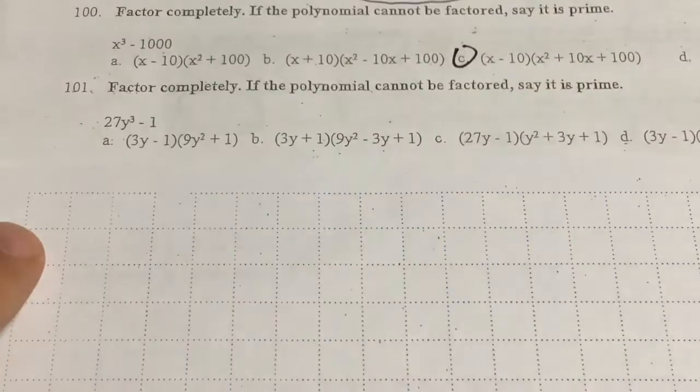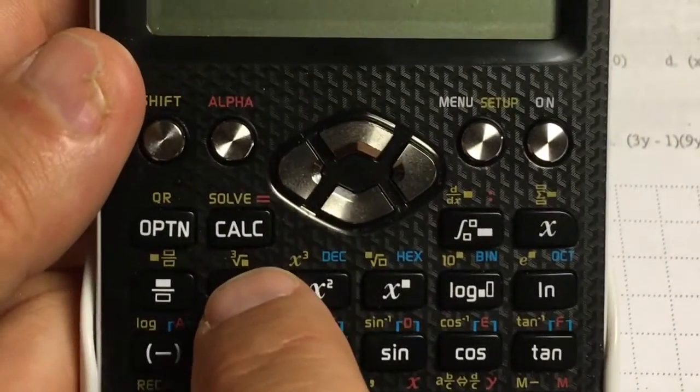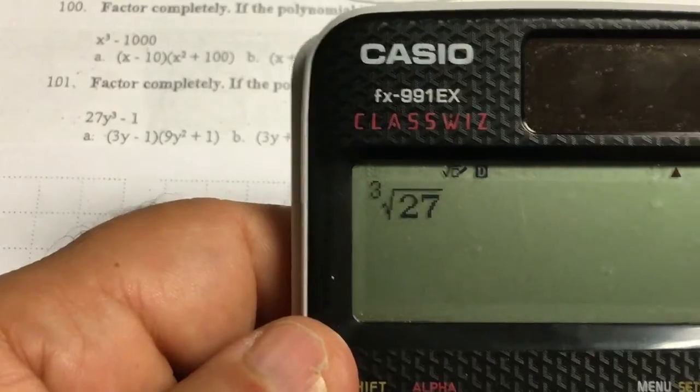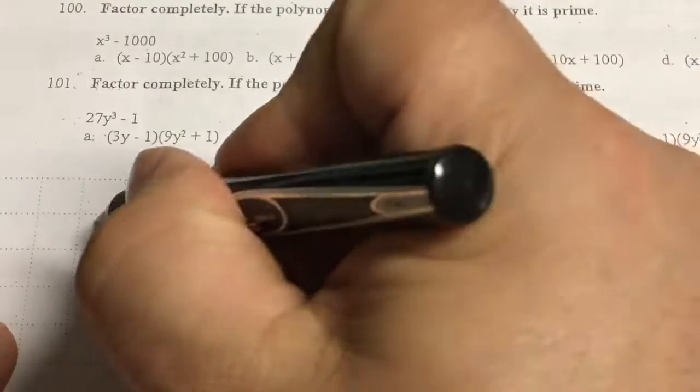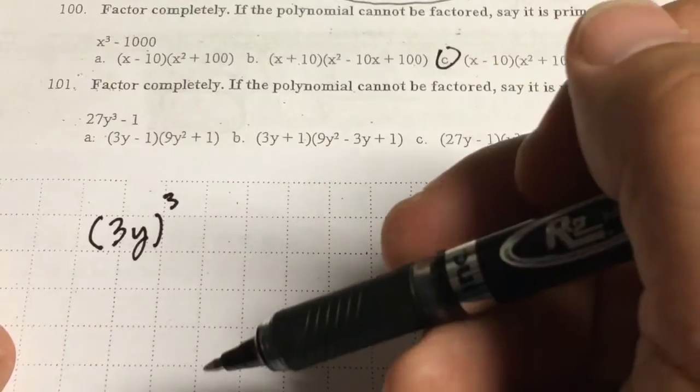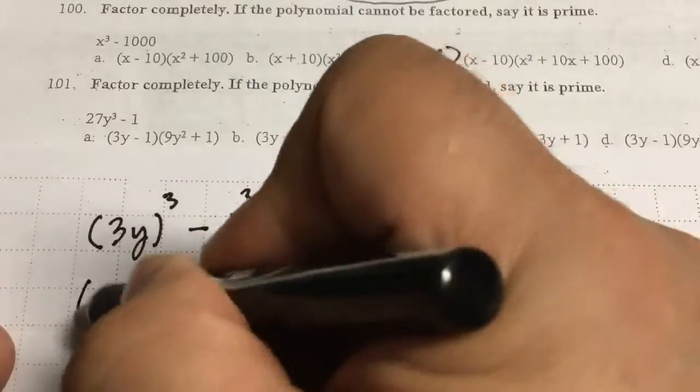Last one. I'm going to use soap again. Cube root of 27. Let's see here. Shift, square root. That's the cube root. 27. Cube root of 27 is 3. Here we go. This is going to be 3y the quantity cubed, because 3y times 3y times 3y is 27y cubed. Minus the cube root of 1 is 1. So I'm going to write that. And I'm going to use soap again.